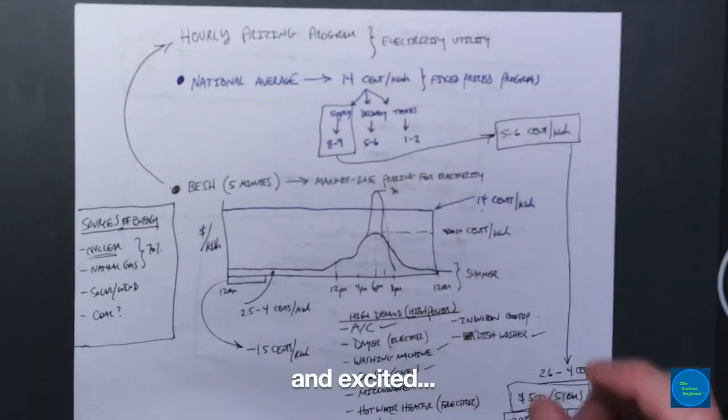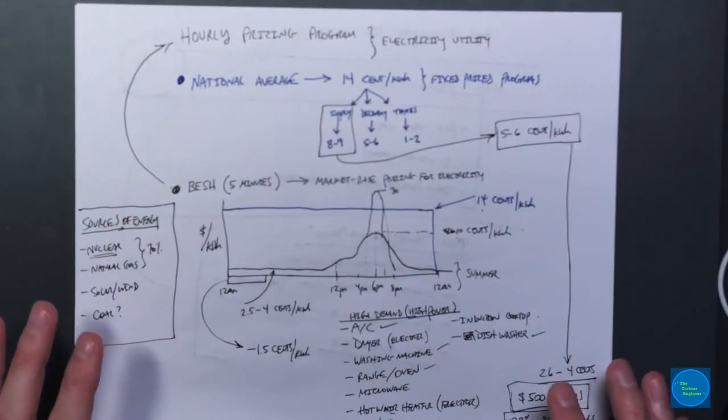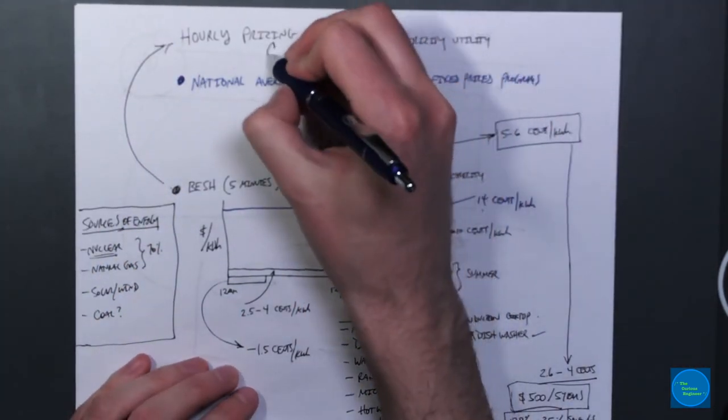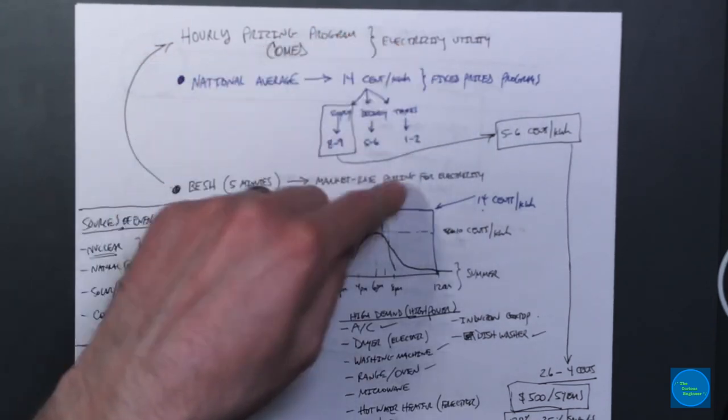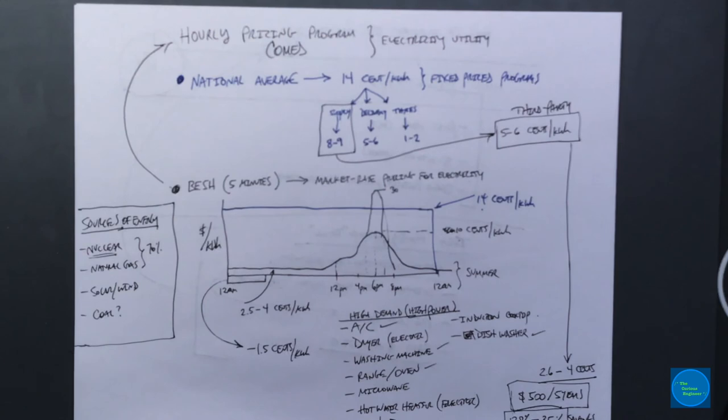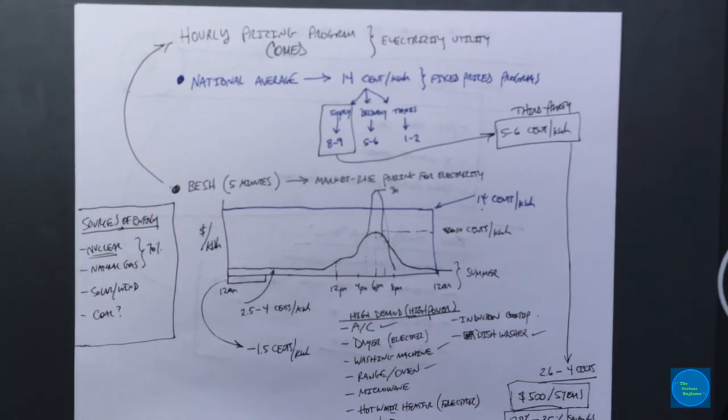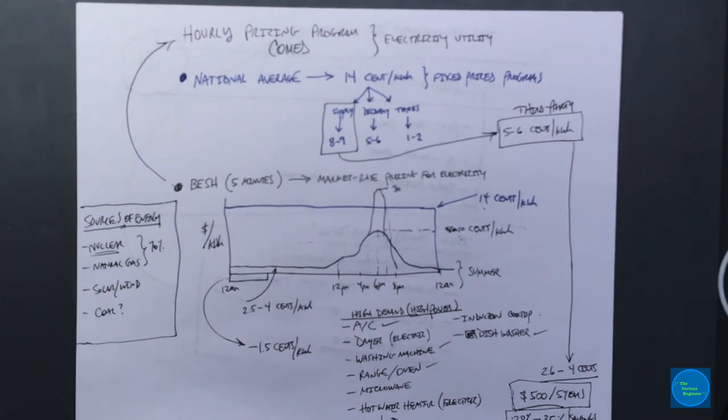Hopefully that was a useful and helpful introduction into what the hourly pricing program is from ComEd versus the national average or even some of these third party programs. I am confident that this must be available in other states. They may call it something different. It's something to check out to see if it's available in your area. In the next video, we'll talk about this project that I'm embarking on. Thanks for watching this video. If you enjoyed it, please give it a thumbs up and subscribe. In the next video, we're going to take a look at the proof of concept. I'll see you in the next one.